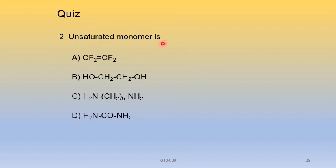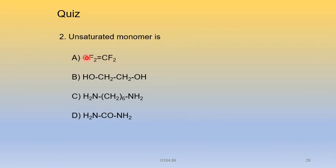Which is an unsaturated monomer? Options: A. CF2=CF2, B. HO-CH2-CH2-OH, C. NH2-(CH2)6-NH2, D. NH2-CO-NH2. Unsaturated means a compound having double or triple bonds between carbons. Tetrafluoroethylene (CF2=CF2) has a double bond between two carbons, so option A is the correct answer.